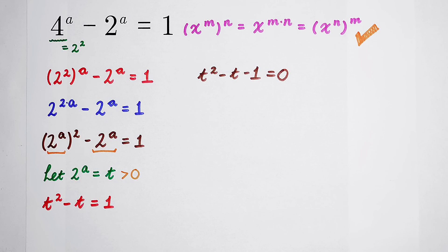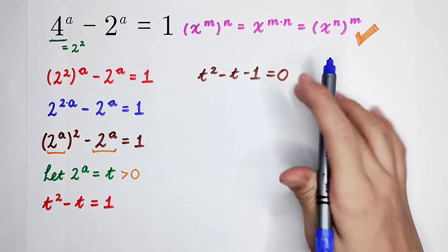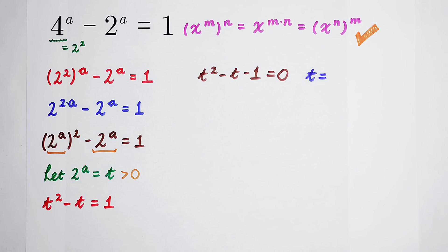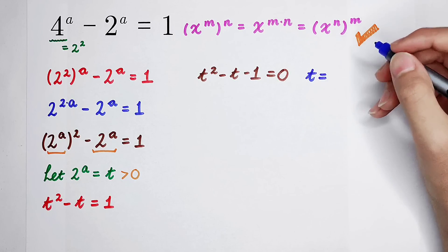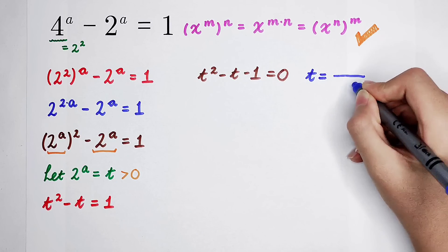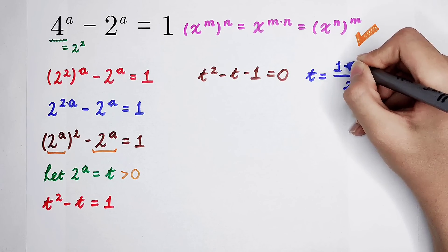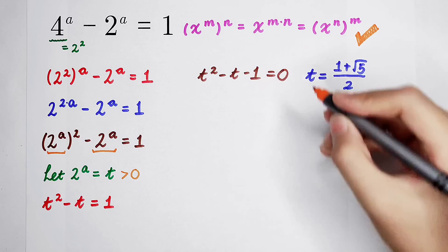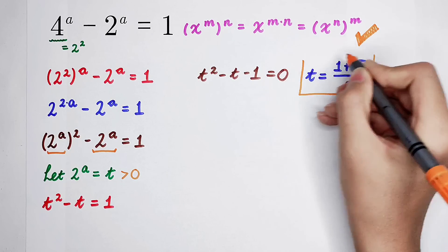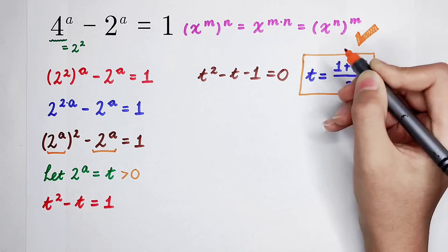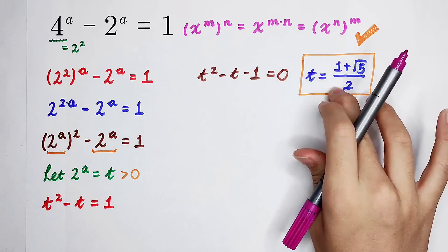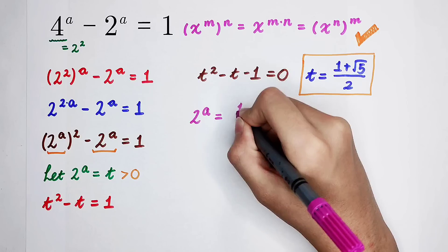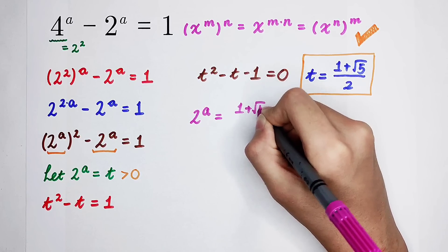So we only solve for the positive root of this equation. The value for t is: t equals 1 plus the square root of 5, all over 2. Now substitute this back into 2 to the power of a equals t, giving 2 to the power of a equals 1 plus square root of 5, all over 2.